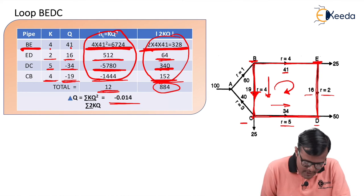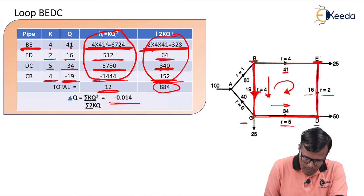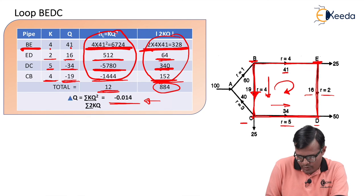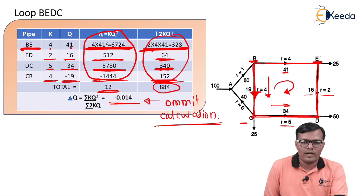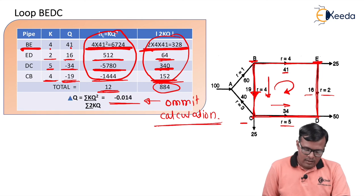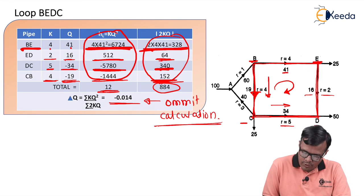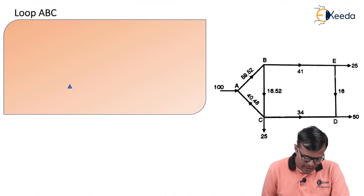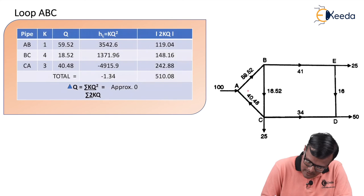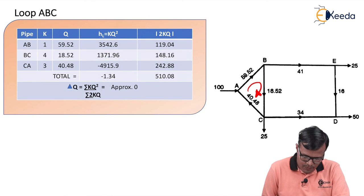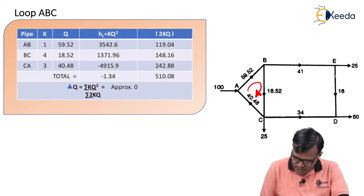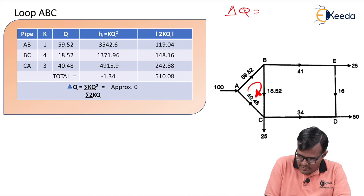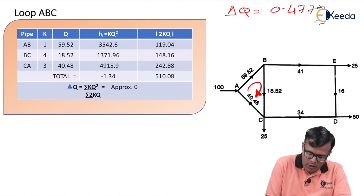The ratio of these two values gives delta Q = 12/884 = −0.014. Since this value of 0.014 is very small, we are going to omit further calculations for this loop. We will instead revise the calculations for the first loop, loop A-B-C, because the delta Q value there was larger (0.477 or 0.48).